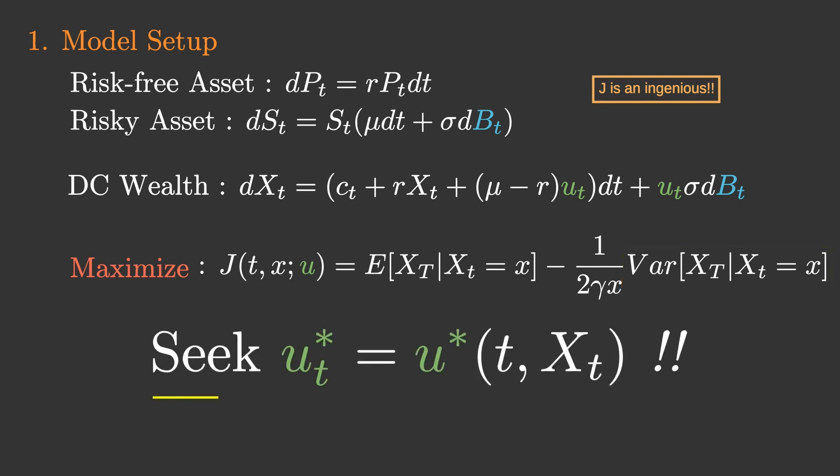Our objective is to seek the optimal controller U of the investment strategy such that this J is maximized. Maximizing J would imply efficient investment, since it increases the average DC asset amount and reduces variance.